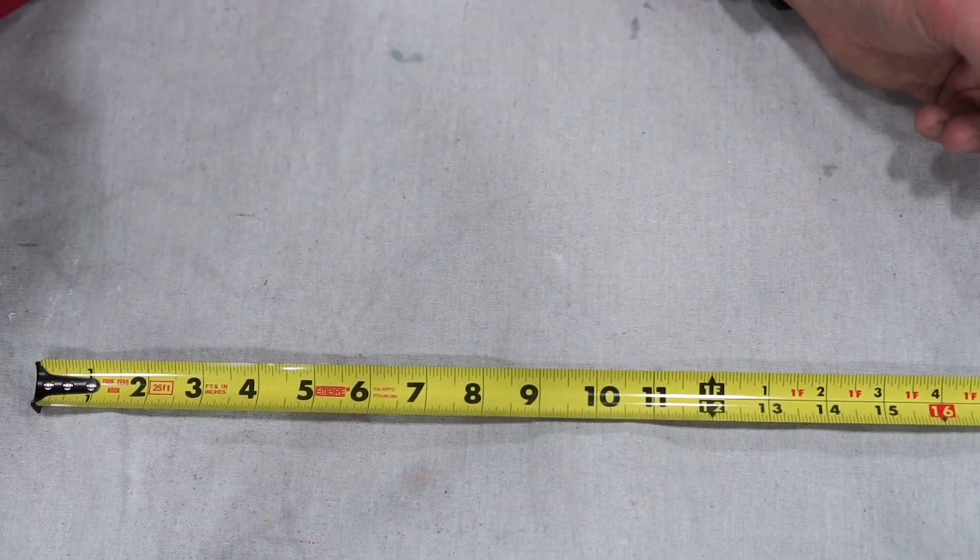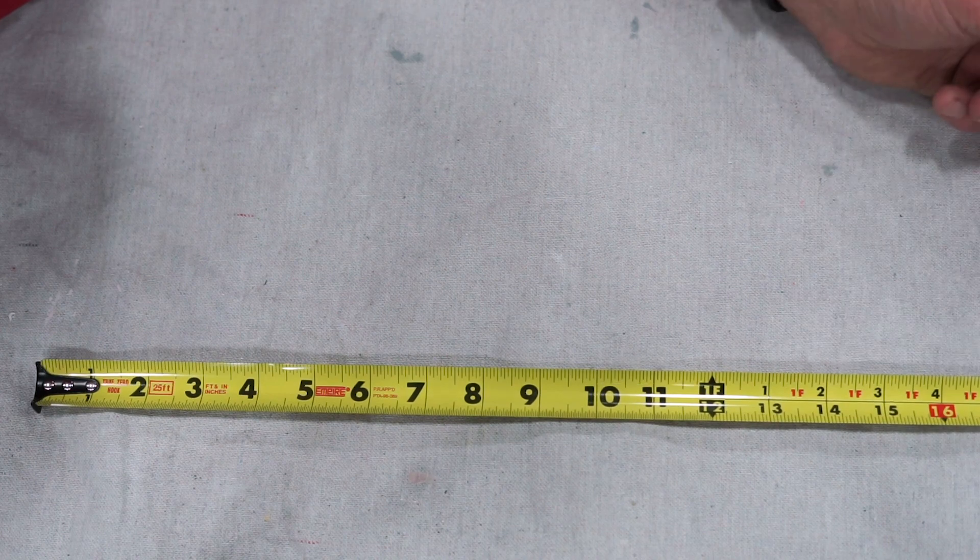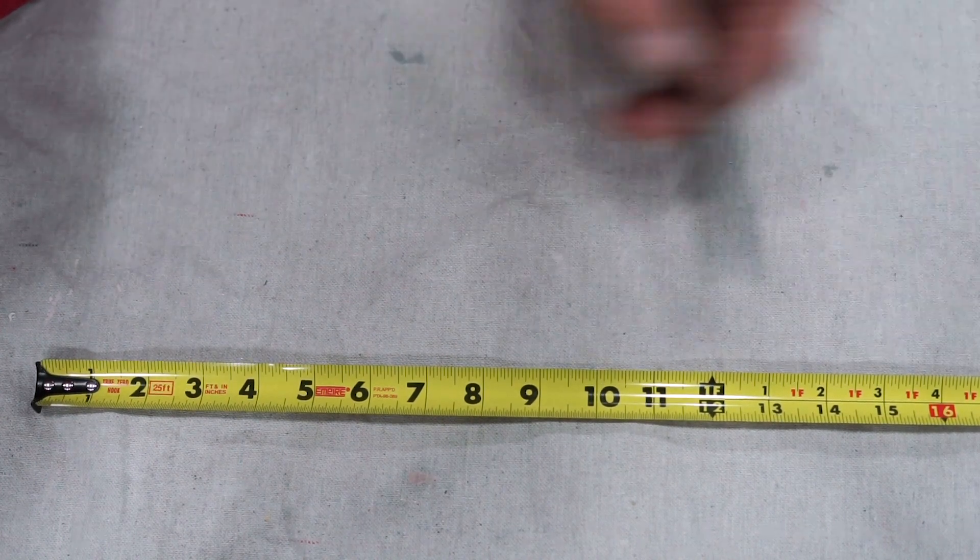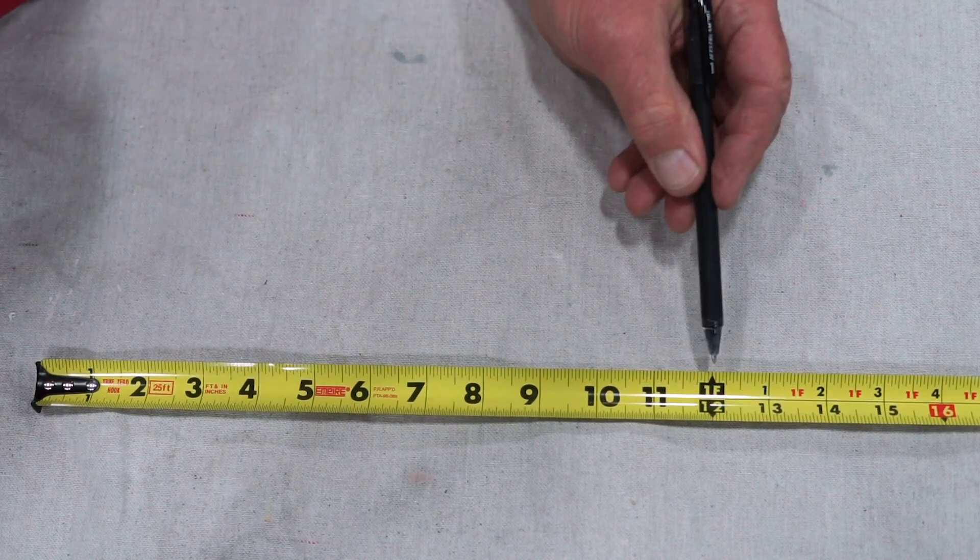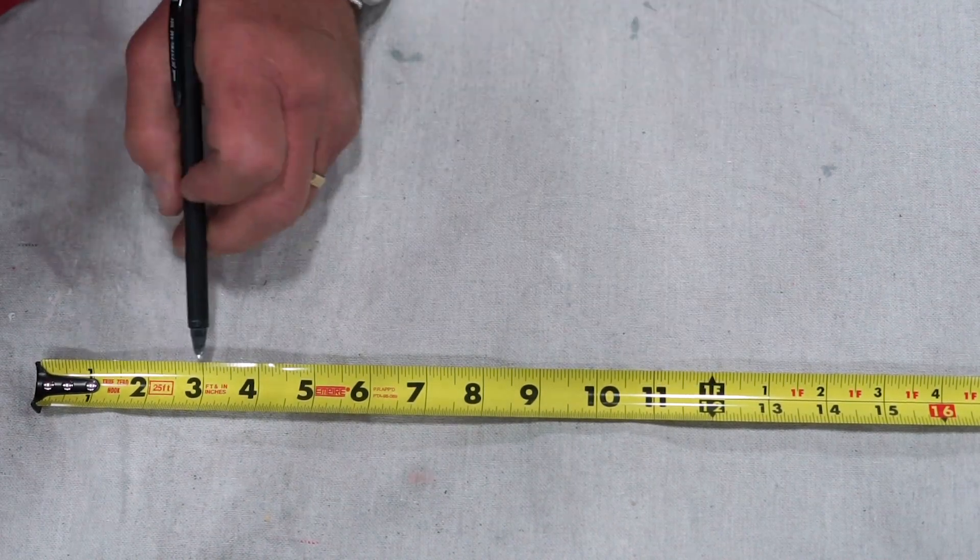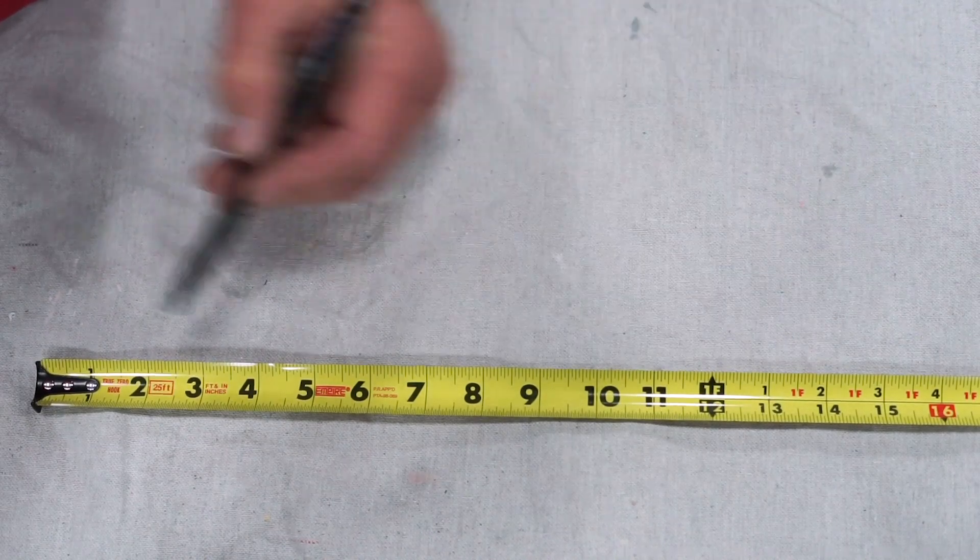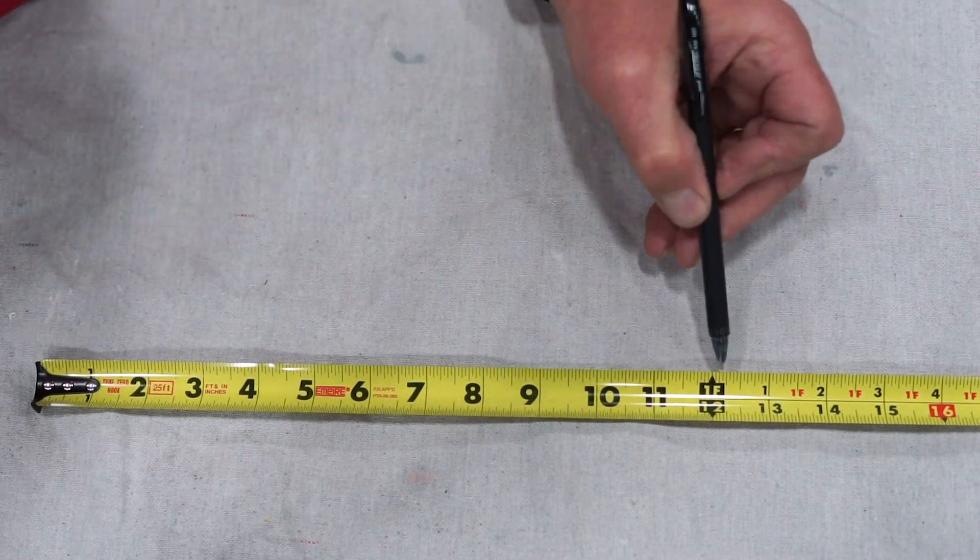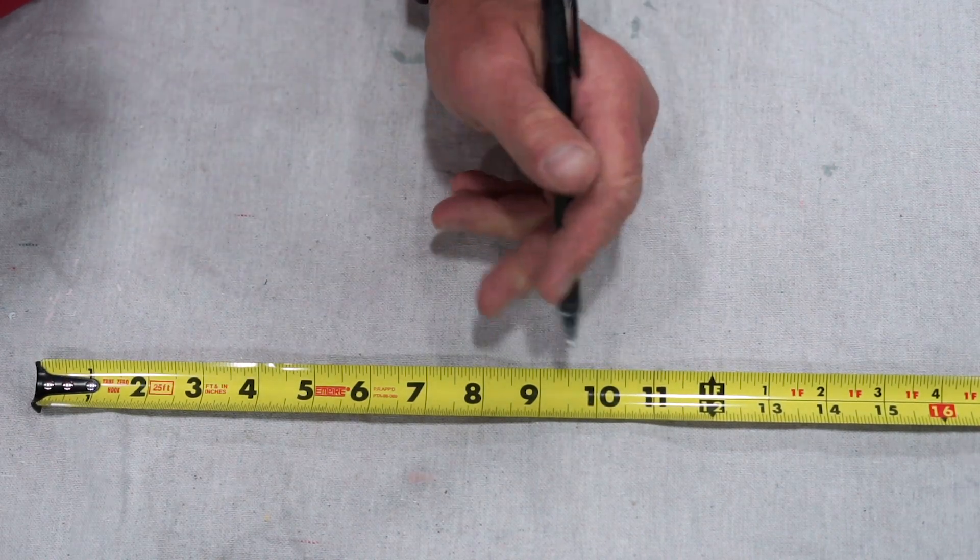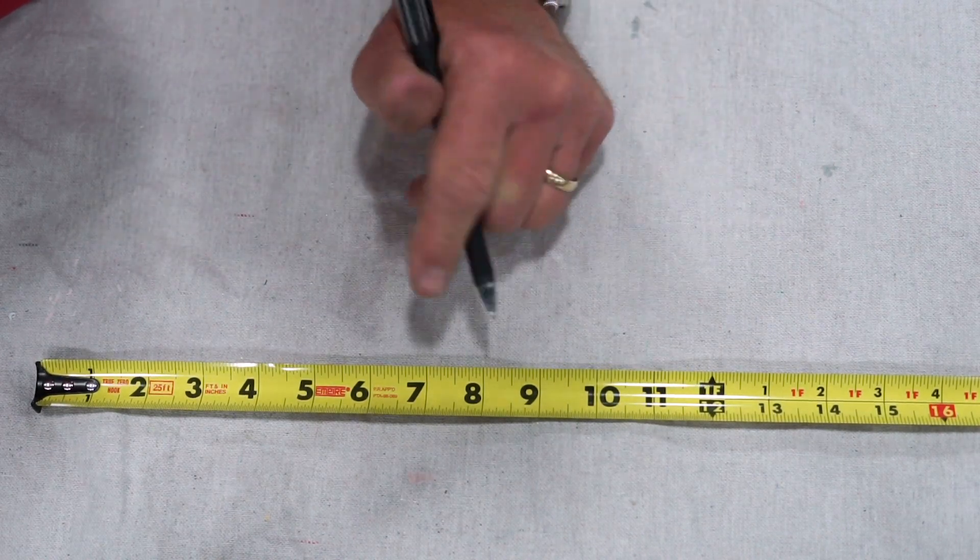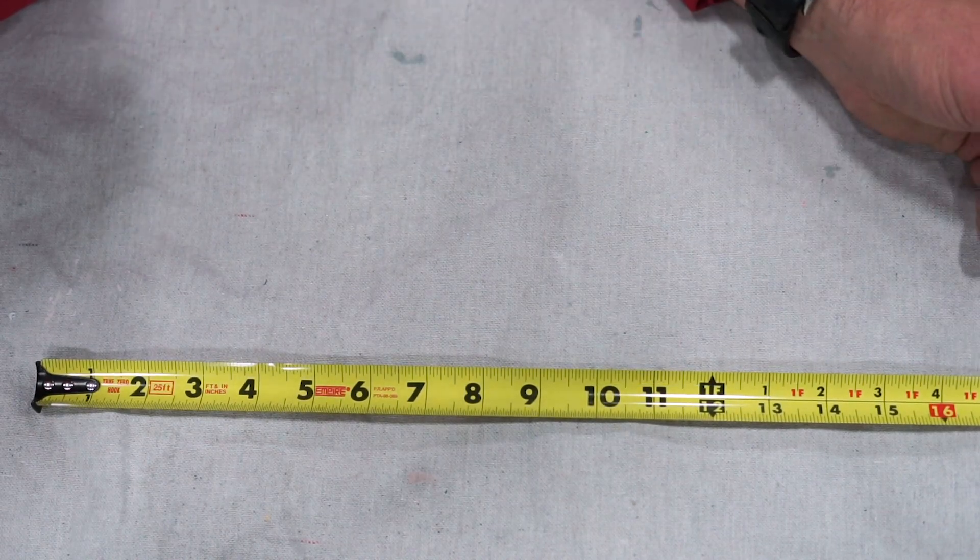All right, so I've extended the tape measure out here to kind of give you a snapshot of what you're going to see as you extend a tape measure out. Obviously, when you take a look at this, you've got the big numbers, which correspond with the inches, right? One, two, three, four, all the way up. And then it kind of changes in sizes. The reason why you see the bigger numbers up to 12 inches is a lot of times if you're doing layout, measuring something in a smaller area, it's just bigger and easier to see. And then the numbers tend to get a little bit smaller.